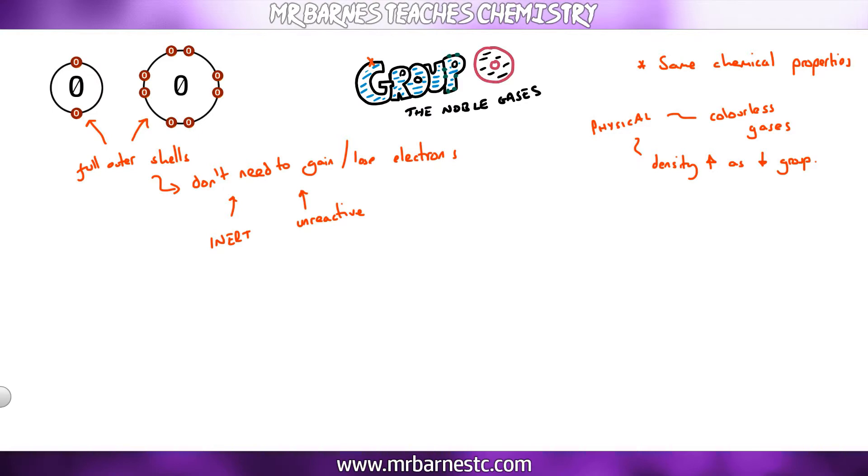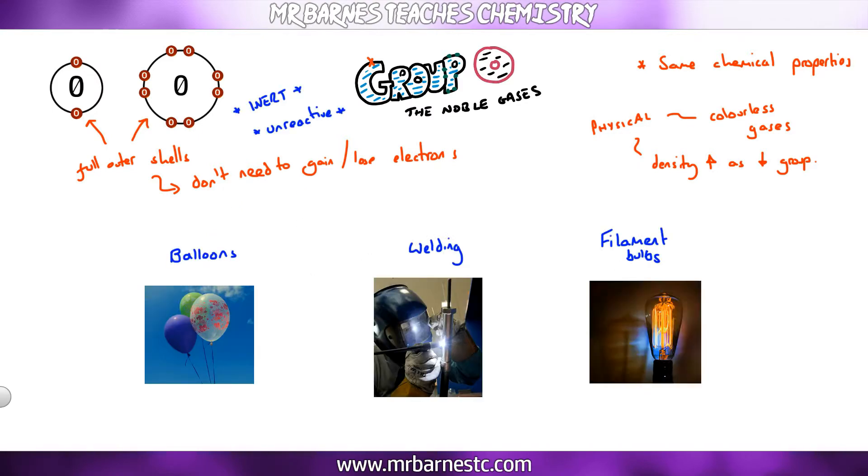These properties make them useful for three things: balloons, welding, and filament bulbs. So what you're expected to know is the names of the noble gases that are used for each of those different uses and an explanation as to why. If we have a look at party balloons or hot air balloons, they use helium. The reason for that is they are less dense than air. The other thing is they are unreactive and that makes them non-flammable. Hydrogen used to be used, but hydrogen is highly flammable so we don't use that. Why are they unreactive? They have a full outer shell, they don't want to gain or lose any electrons.